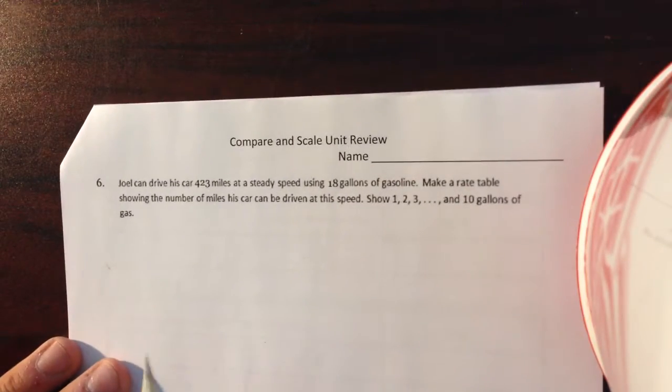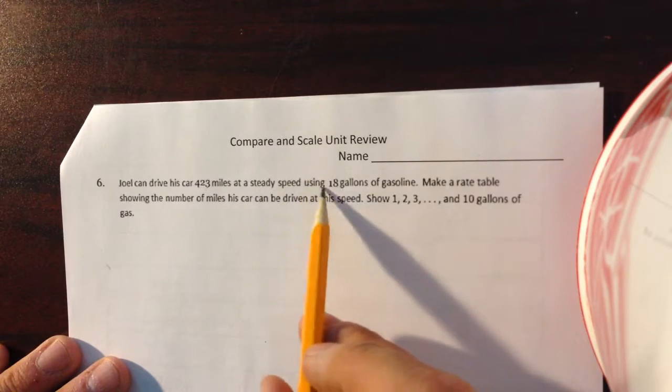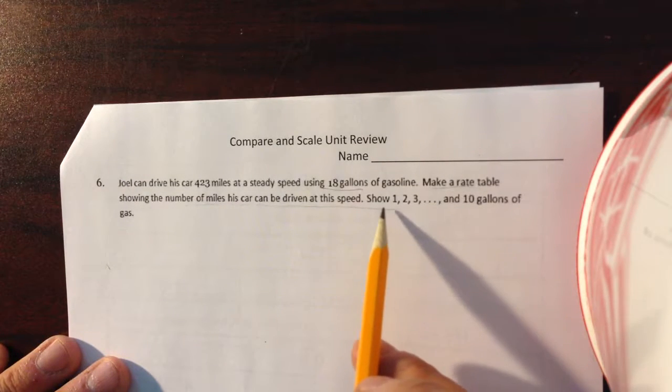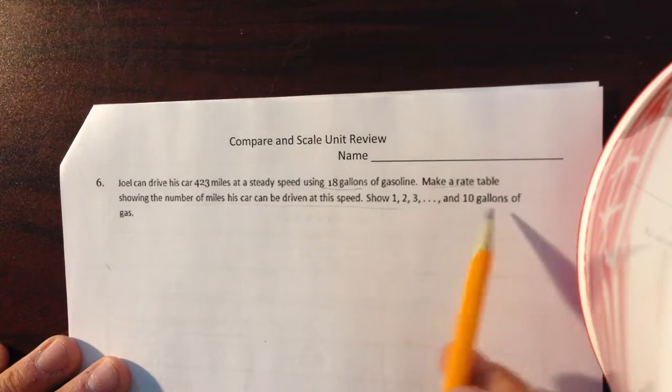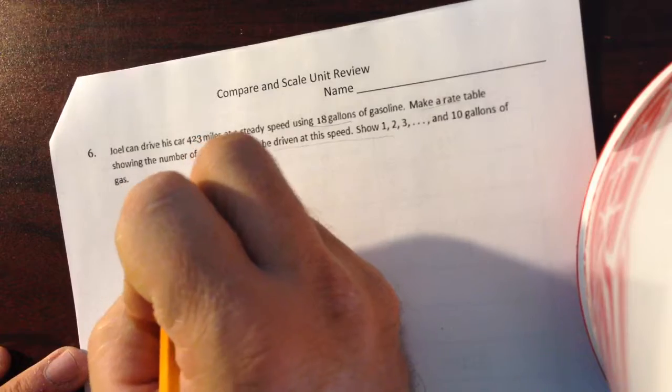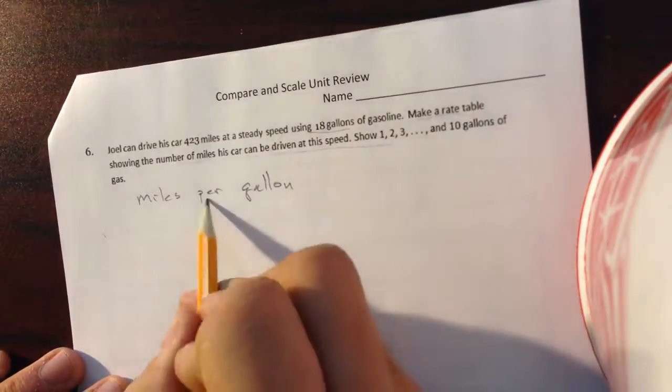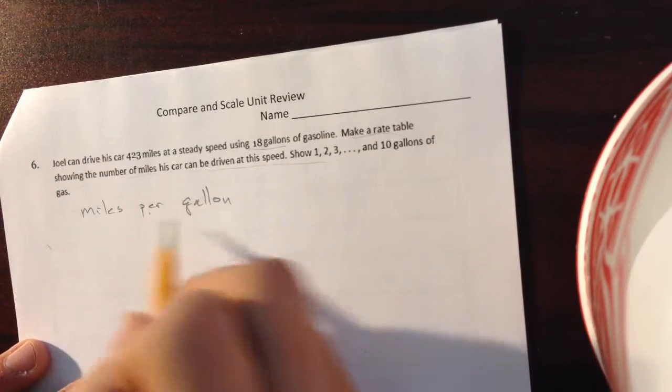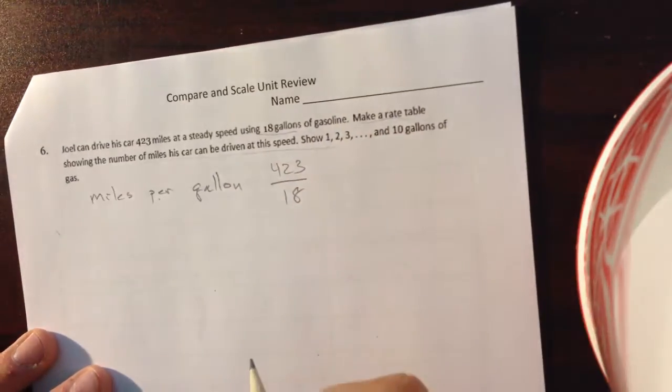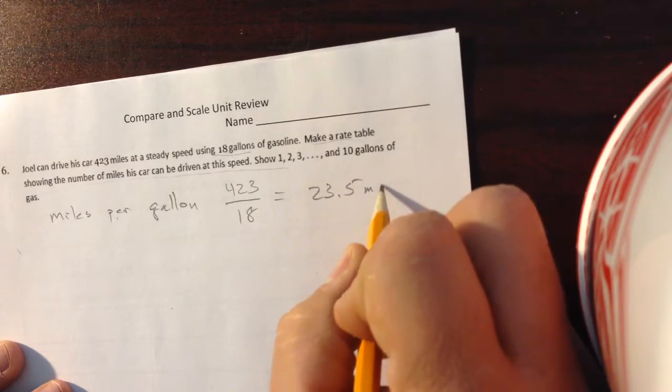Taking a look at the back. Joel can drive his car 423 miles at a steady speed using 18 gallons of gasoline. Make a rate table showing the number of miles his car can be driven at speeds with gallons 1, 2, 3, up to 10 gallons. Now, before I start, I want to know how many miles per gallon he gets. The word per means divide. So, all he's got to do is do what it says right here. 423 divided by 18 gallons. And if I do that, that's going to give me 23.5 miles per gallon.